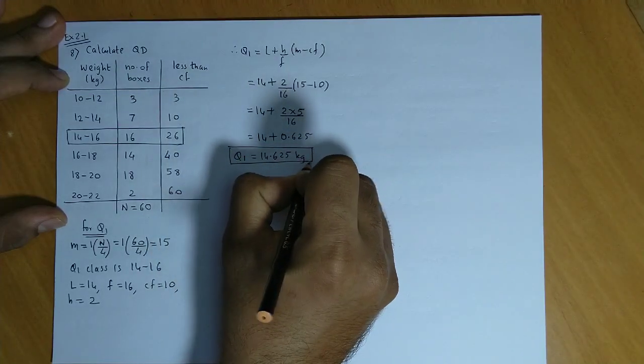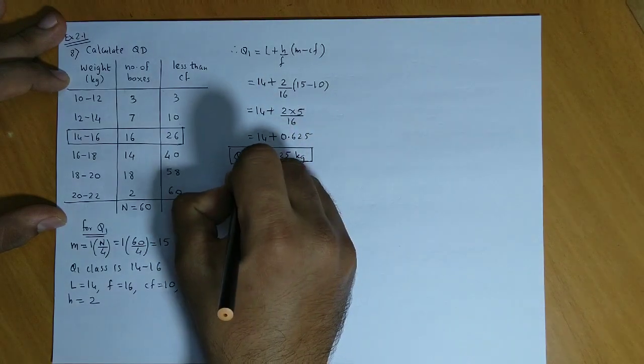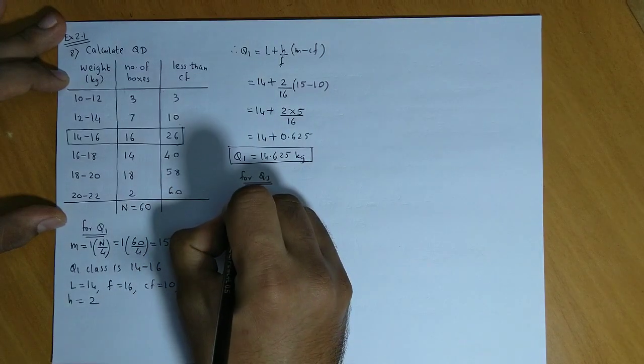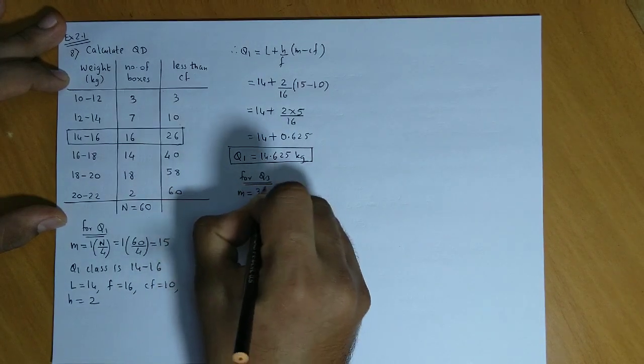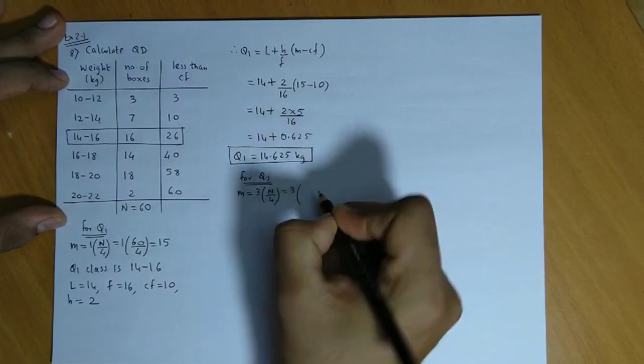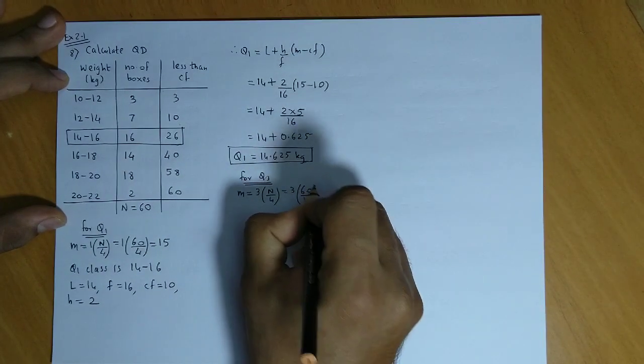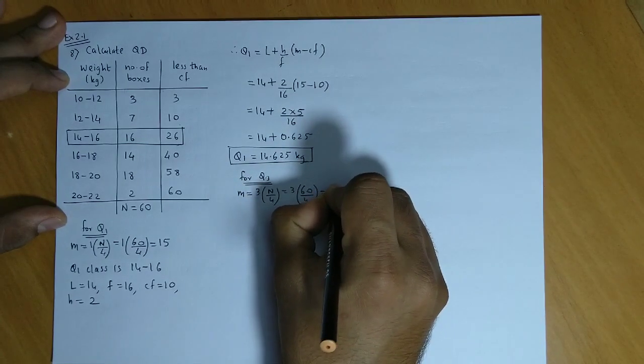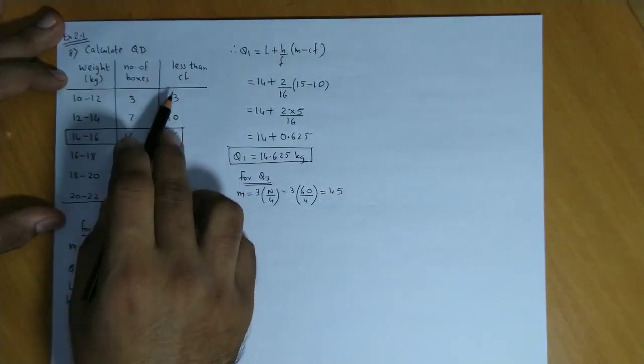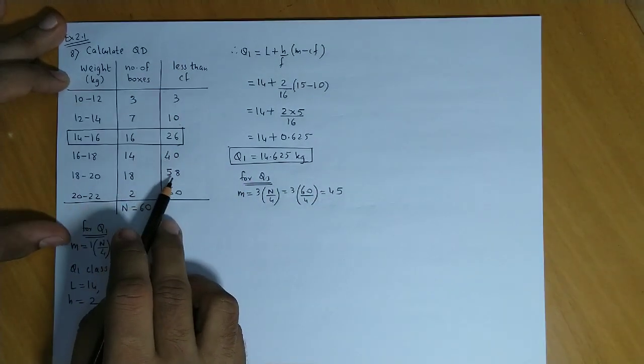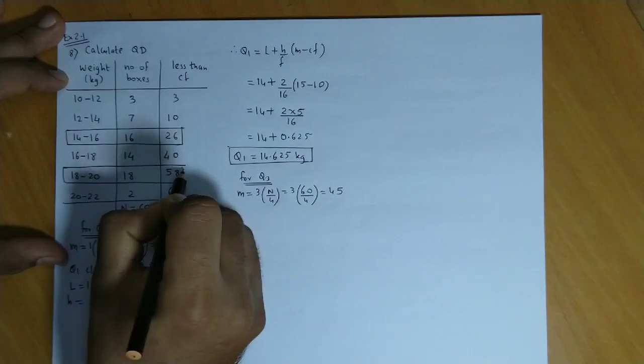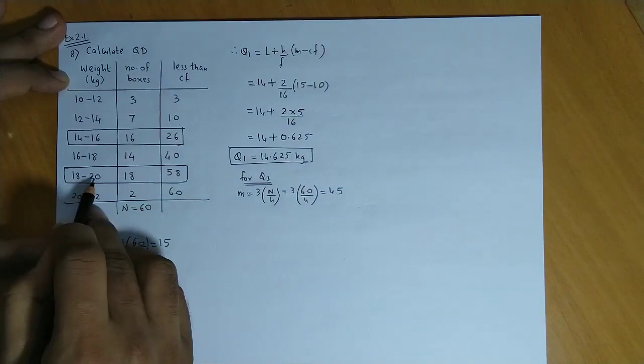In a similar manner we calculate Q3. For Q3, the rank M equals 3 times N by 4, which is 3 times 60 by 4, so that is 45. We locate 45 in the less than CF column. 45 comes after 40, so Q3 class is 18 to 20.